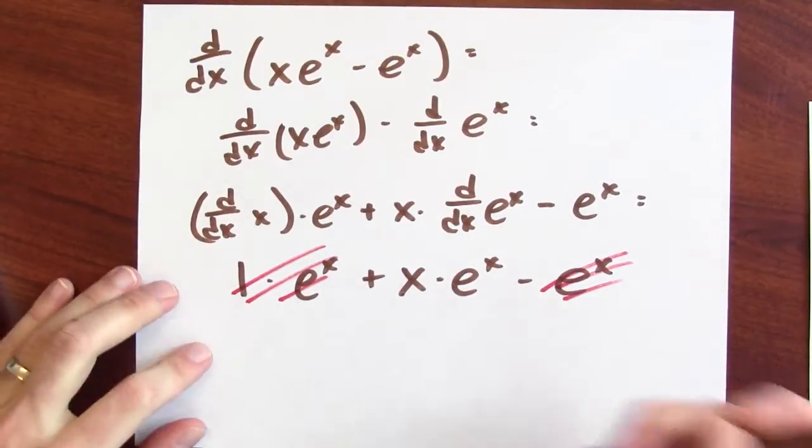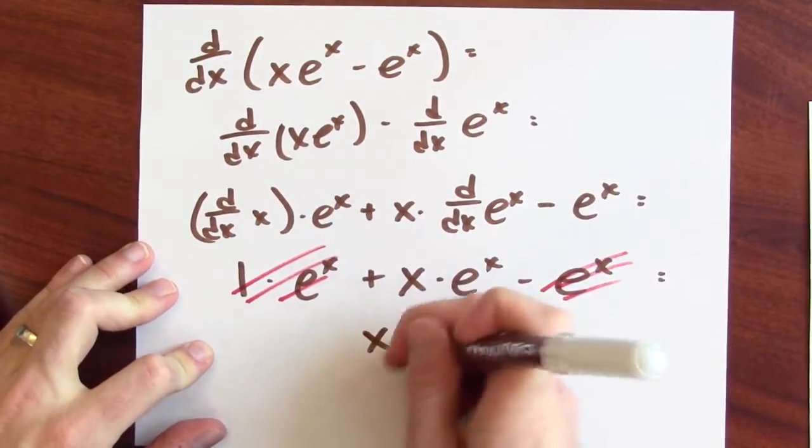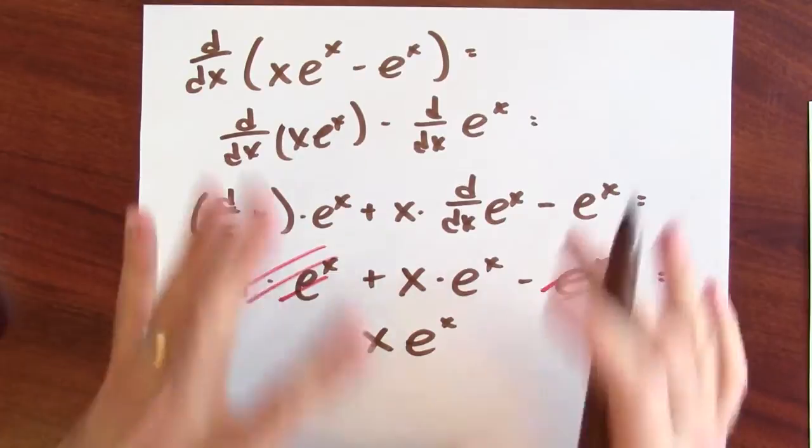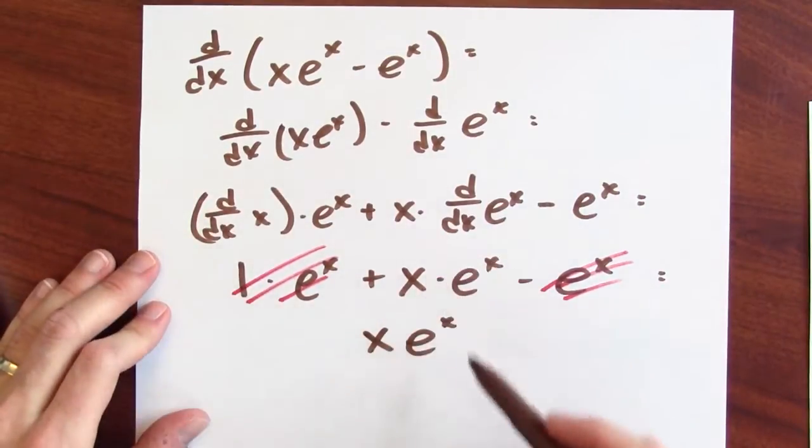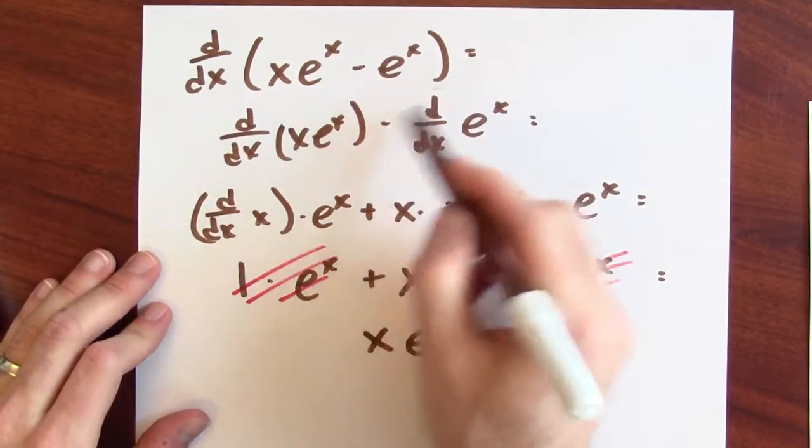And all I'm left with is just x times e to the x. So, in fact, we have found an anti-derivative for x e to the x. Here it is. And of course, that makes sense because integration by parts is just the product rule in reverse.